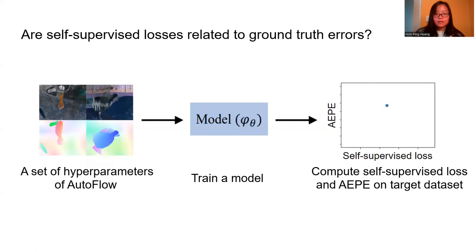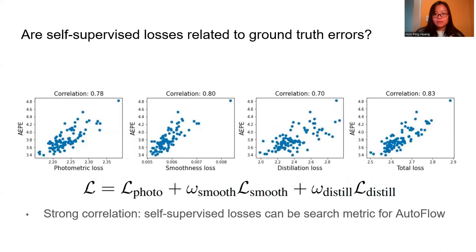Each data point in the plot corresponds to the performance of one optical flow model. We evaluate a set of optical flow models and calculate the photometric loss, smoothness loss, and distillation loss in the self-supervised learning literature.